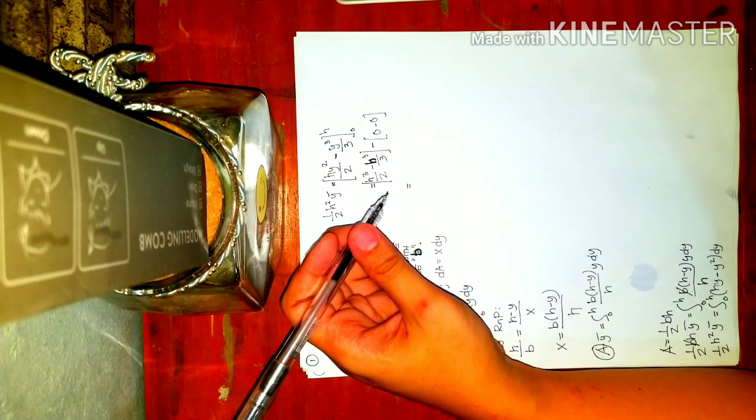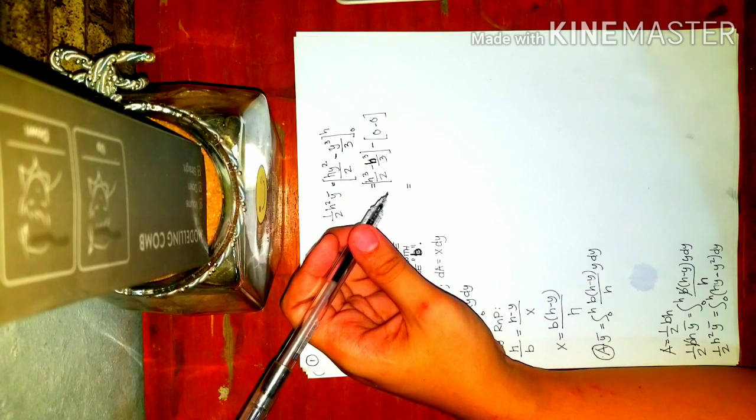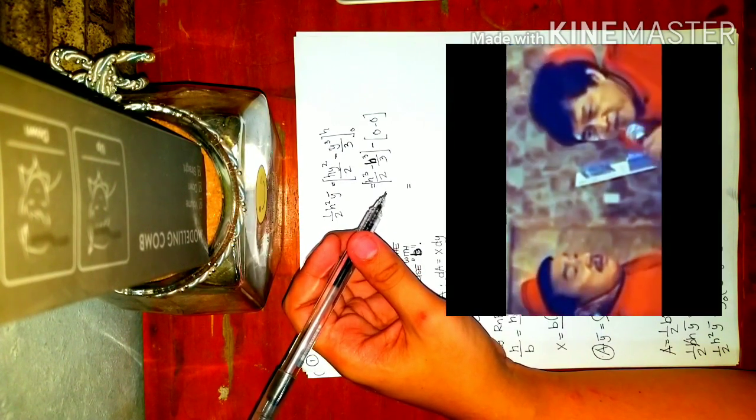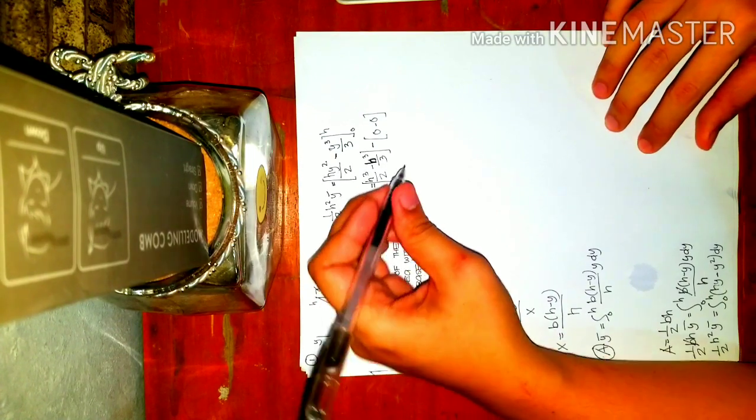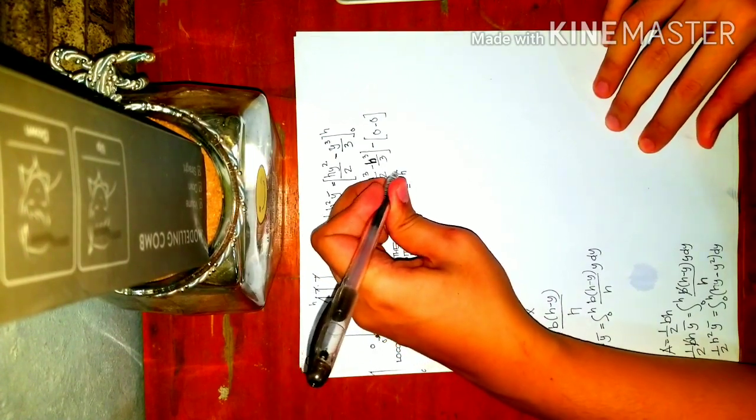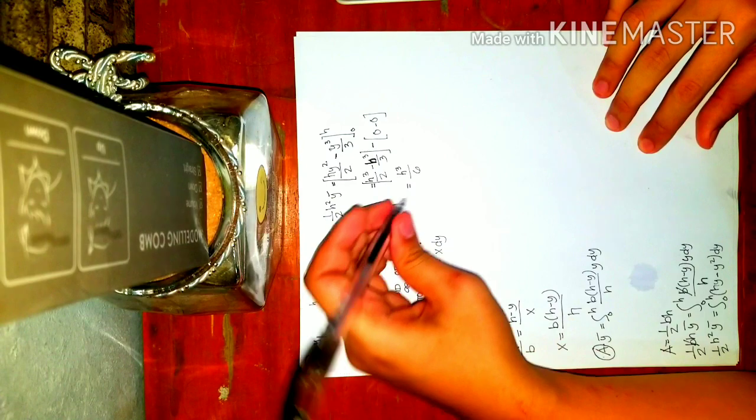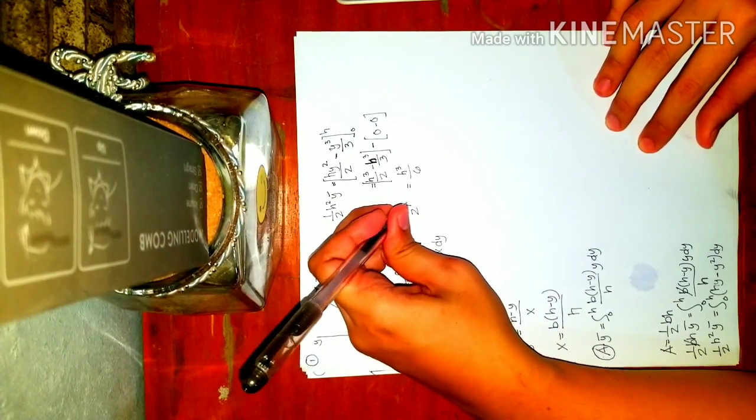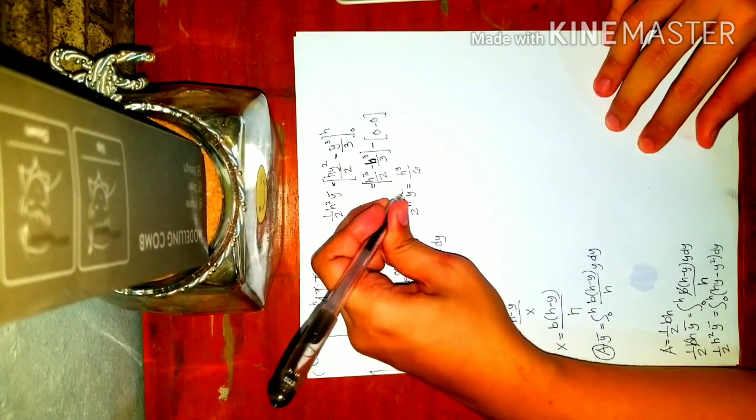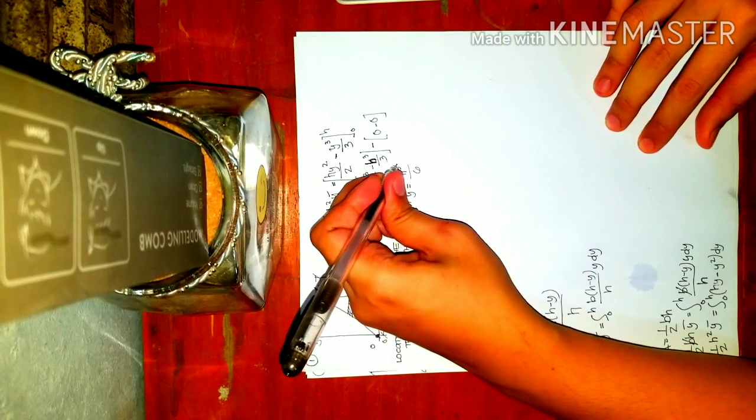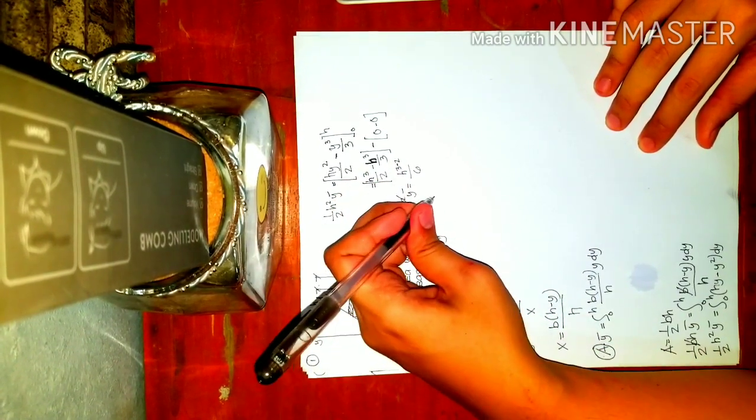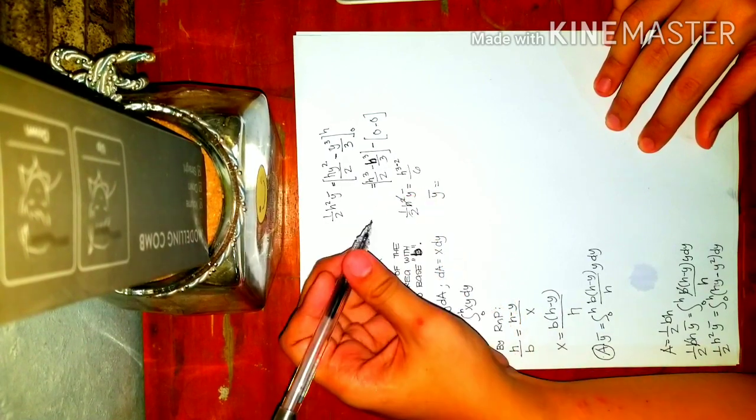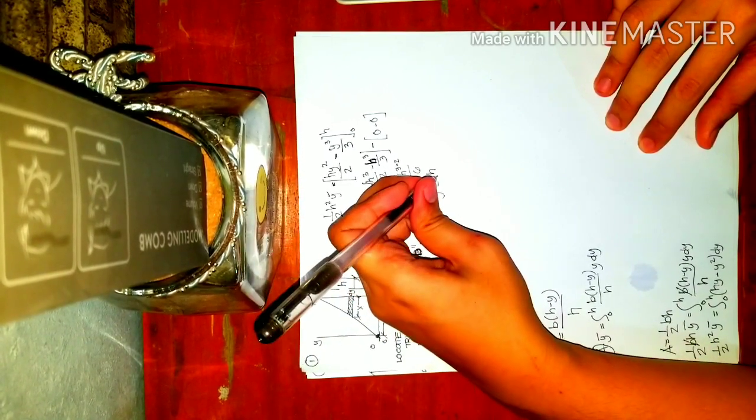One half minus one third equals h cubed over 6. So one half h squared y bar equals h cubed over 6. Cancel the h squared, and y bar will just equal h over 3, which is correct.